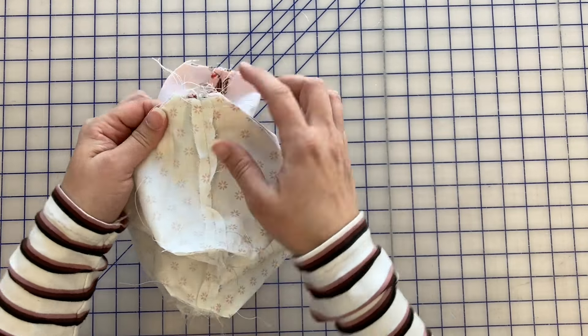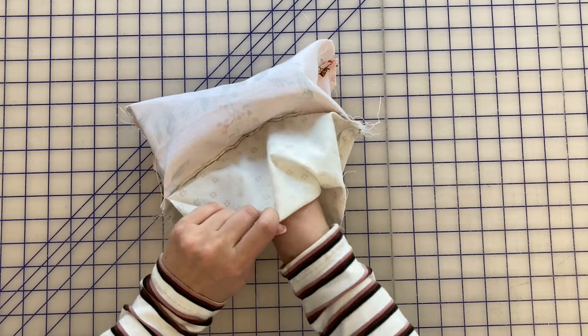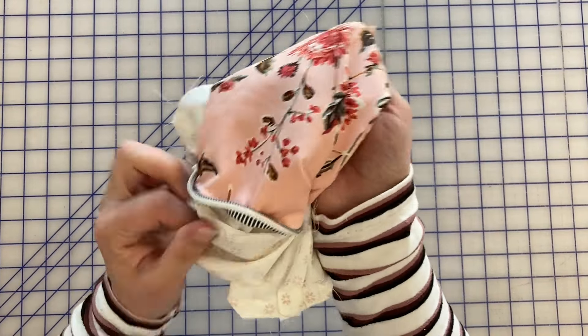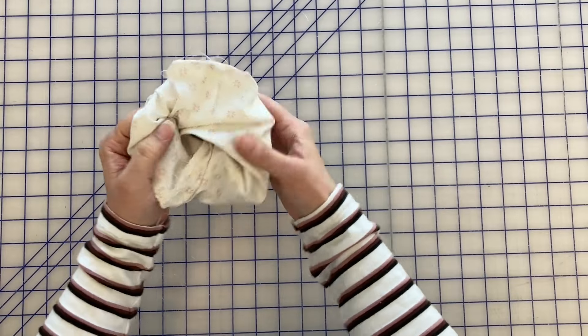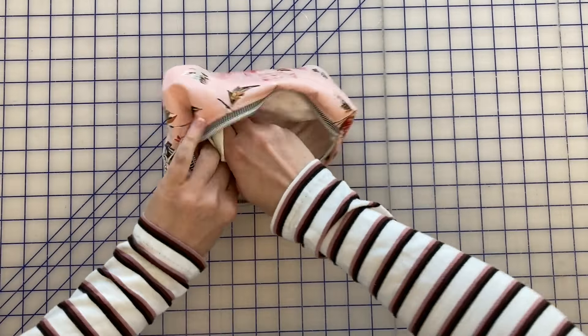Okay, so you can see I've got it sewn on both of those corners and now we're ready to turn the bag right side out. So you're going to reach through the opening and pull the exterior fabric out and kind of tuck the lining back in the bag.